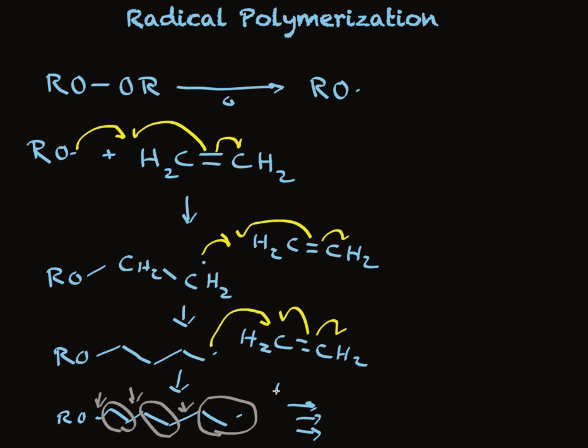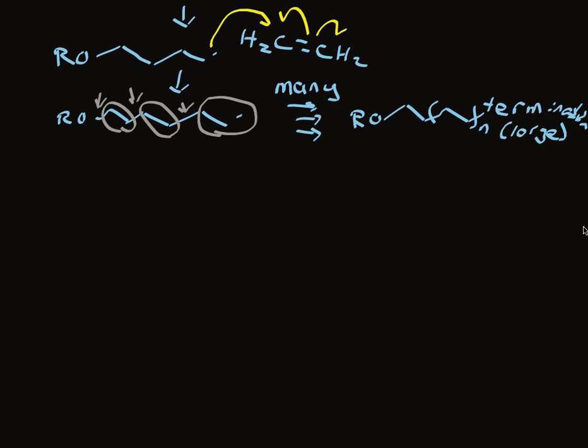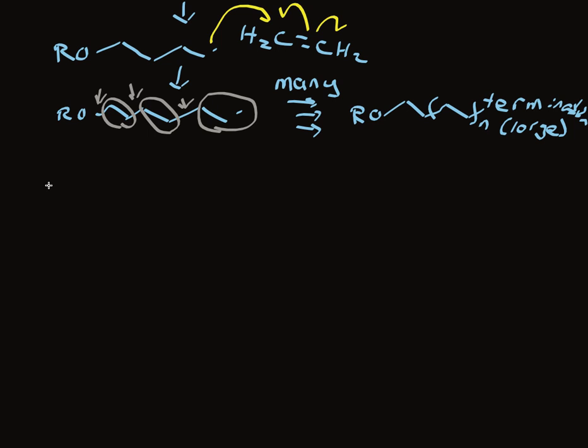After many, many repetitions, we end up with something that has an alkoxy group on the end. It almost doesn't matter because the chain is so long. Tens of thousands of units where n is large. Eventually something at the end will catch that radical. Another radical is a good example and causes termination. This makes polyethylene a compound with many, many ethylene units linked together.